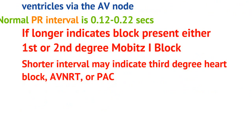Consider either a first degree AV block or a second degree MOBITS 1 block. Remember, in these two blocks we have PR lengthening. In MOBITS 2 blocks, there is no PR interval lengthening — you just have a QRS drop.